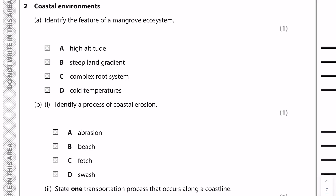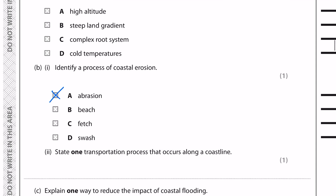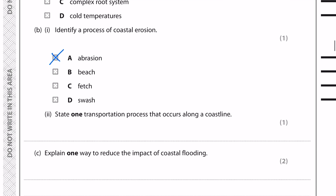Identify a process of coastal erosion — the answer is abrasion: that's when broken rock fragments are hurled at the cliff by waves and break off more pieces of rock, like sandpaper. State one transportation process that occurs along the coastline — longshore drift.